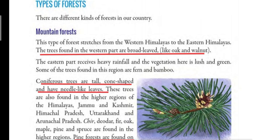In the eastern part, due to very heavy rainfall, the vegetation is lush and green. Since this part of the Himalayas receives a good amount of rainfall, trees and plants grow very well. The two types of trees found on the eastern part are fern and bamboo, while on the western part you find oak and walnut.